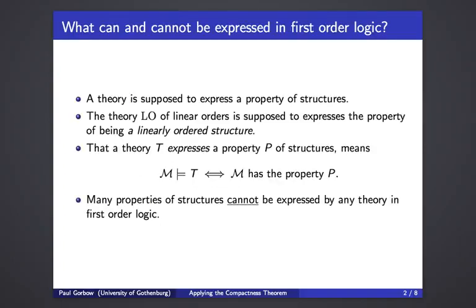Our motivating question here is what can and what cannot be expressed in first-order logic. What do I mean by being expressed? A theory is supposed to express a property of structures. For example, the theory of linear orders is supposed to express the property of being a linearly ordered structure, in the sense that the models of the theory of linear orders are supposed to be exactly the linearly ordered structures.